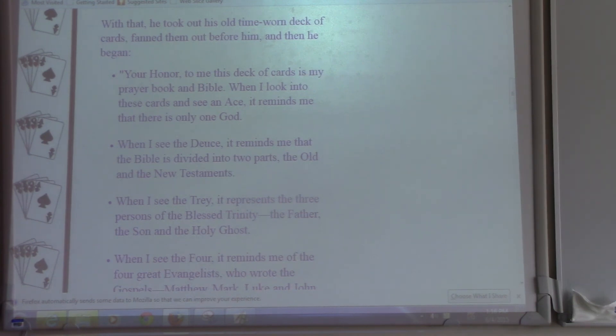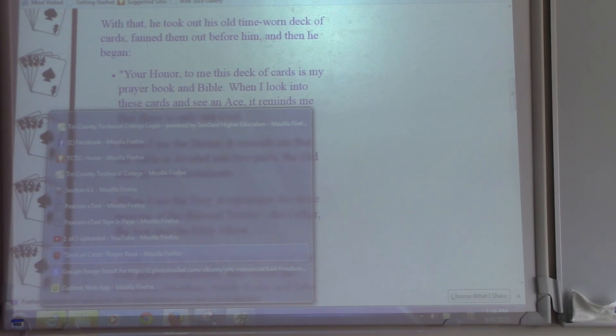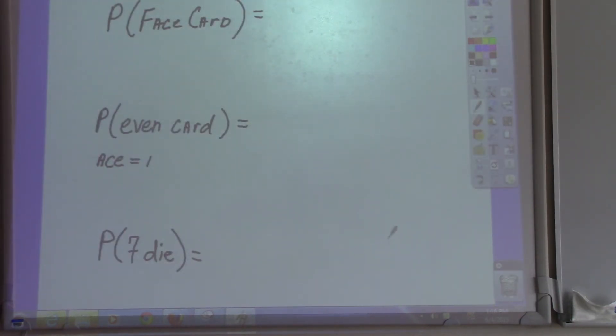I want you to tell me what the probability of a face card would be. I want you to tell me what the probability of an even card would be. And an even card would be just a number that counts as even. In this case we're going to say that ace is equal to 1. I have to give you that information because ace can mean 1 or 11. And let's go ahead and do the probability of rolling a 7 on a die. How many suits are there in a deck of cards? Four.